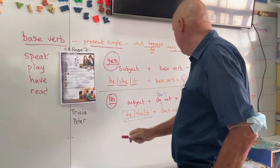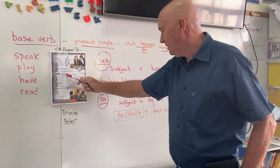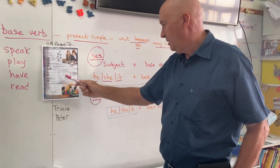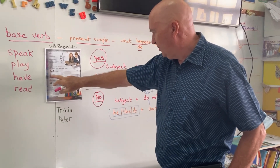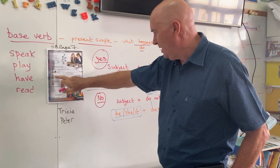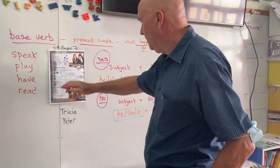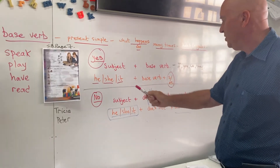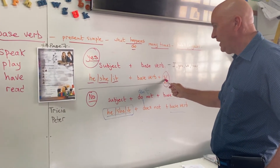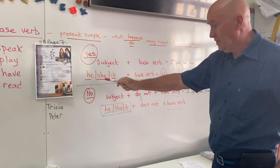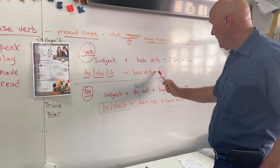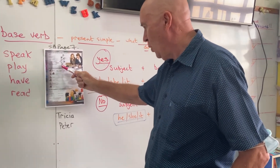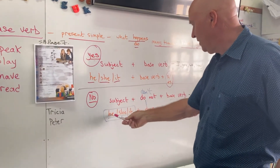Number two: play football or soccer. Two people is the same as 'they', and we're saying yes, so it's just: they play football, they play soccer. Number three: who are we talking about? Trisha — she — and books, we use 'read'. The answer is yes, so with subject 'she' we put an S on the base verb: Trisha reads books.